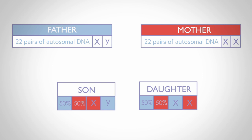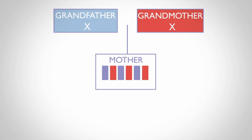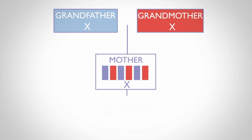This is shown in the next video, which focuses on the inheritance of the X chromosome from the mother. You can see that the X chromosomes from the mother's parents recombine, and this mixture of X chromosome segments is passed on to the daughter.